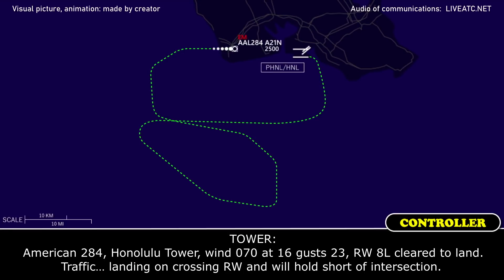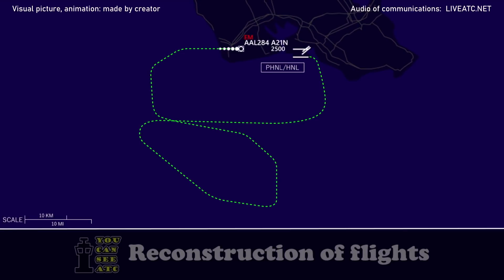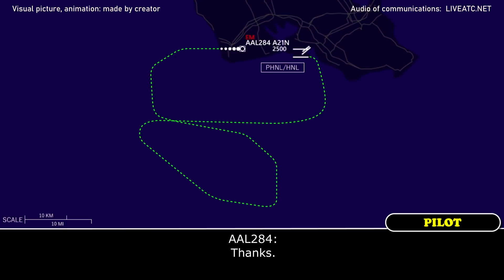American 284, Honolulu tower, runway 8-left, clear to land. Traffic — service van landing, crossing runway, hold short to the intersection. Cleared to land 8-left, American 284, we may let her roll. Okay, 284, you got the whole runway. Thanks.